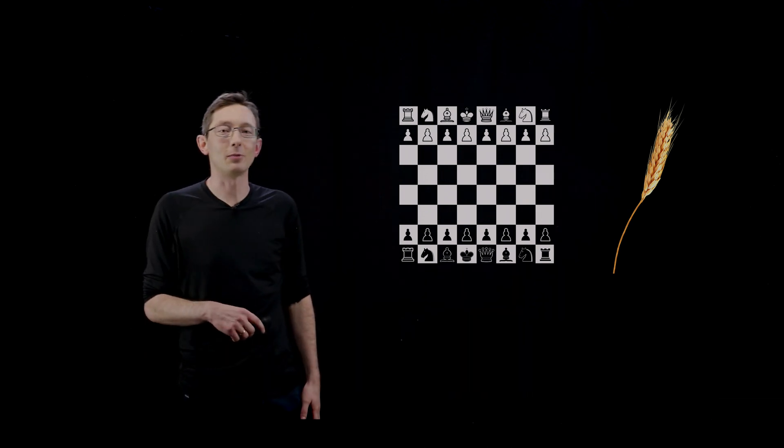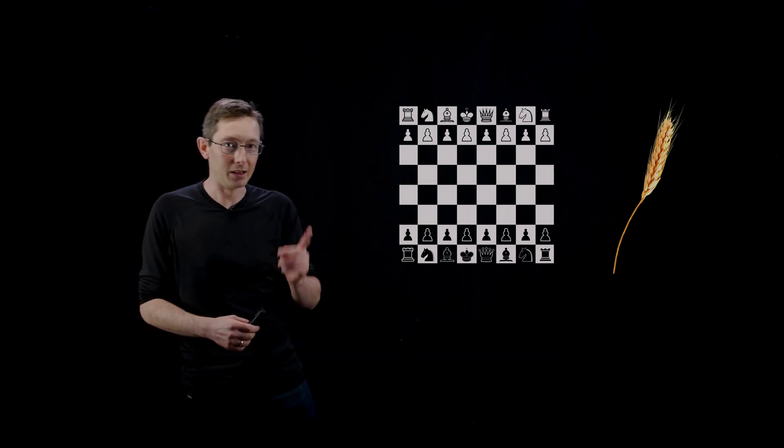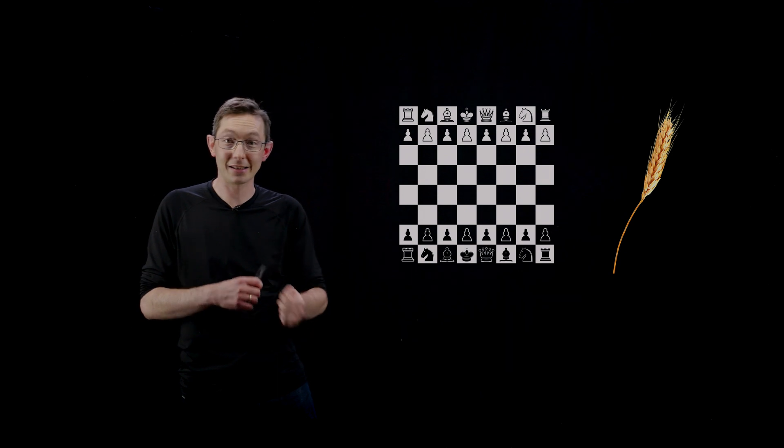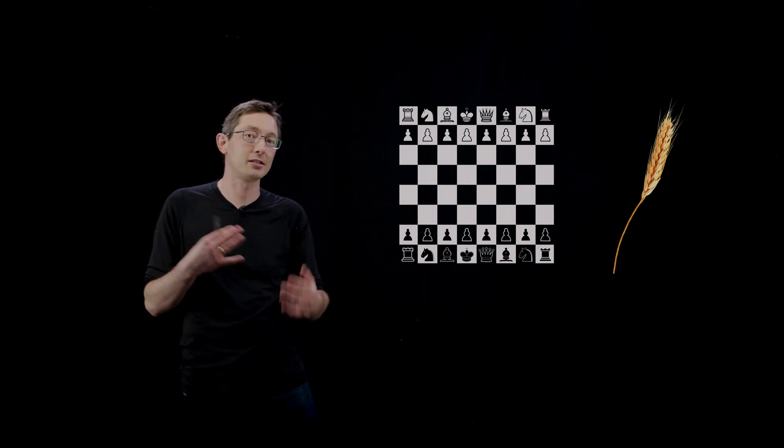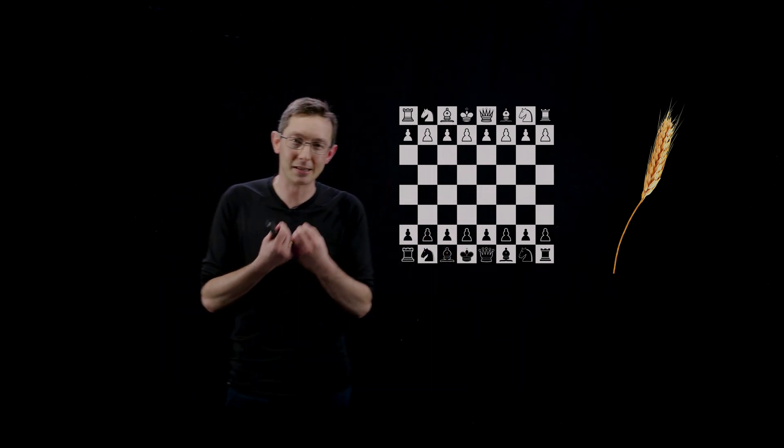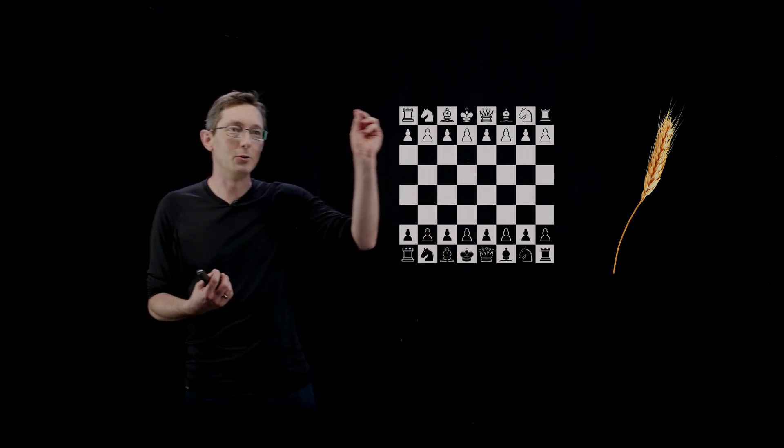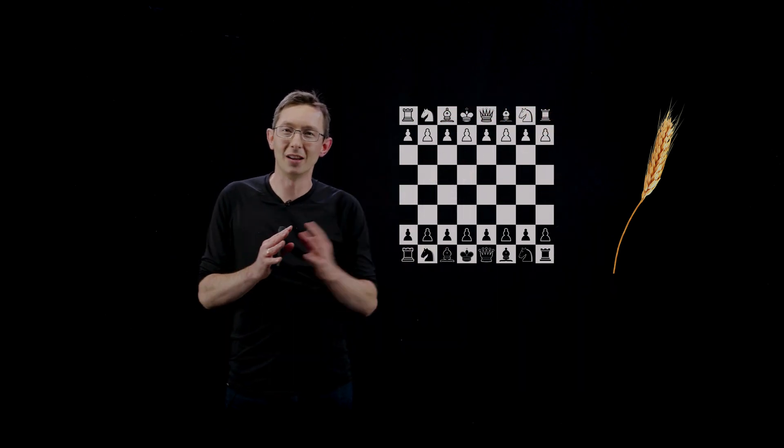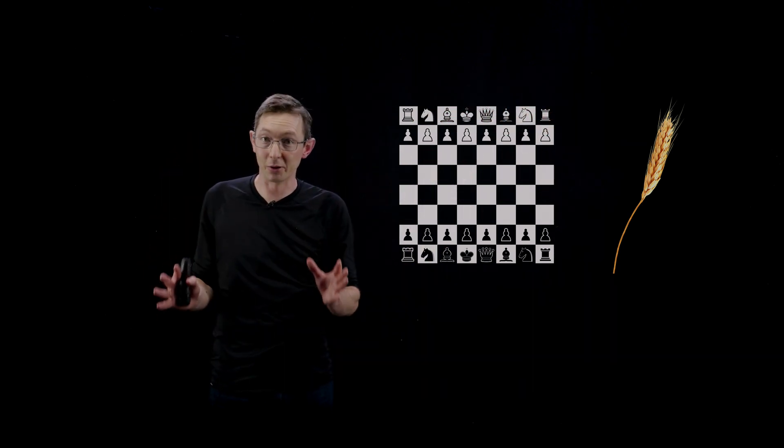And doing what any reasonable, rational king would do at the time, he ordered the inventor executed as a lesson to anyone else who would try to outsmart a king. And I've always loved that story because it's such a simple concept that if you double just a few times, you can get astronomical numbers quickly.